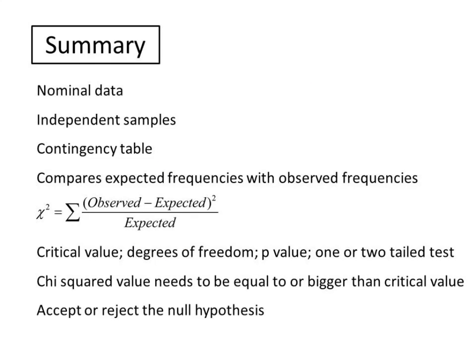So here are a few reminders about using and interpreting chi-squared. It's a test for nominal data from independent samples, and data is presented in a contingency table. It basically compares expected frequencies with observed frequencies, and the chi-squared value is calculated using the formula.